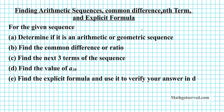Let's take a look at the instructions for the examples. For the given sequence, determine if it is an arithmetic or geometric sequence, find the common difference or ratio, find the next three terms of the sequence, find the value of A30, and lastly find the explicit formula and use it to verify your answer in D.